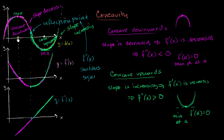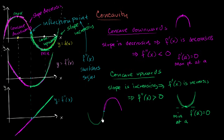This is a case where we went from concave downwards to concave upwards. If we went from concave upwards to concave downwards, then at that inflection point, the slope was increasing — so the second derivative would be positive — and then the slope is decreasing, so the second derivative would be negative, going from positive to negative. In either case, you are talking about an inflection point.